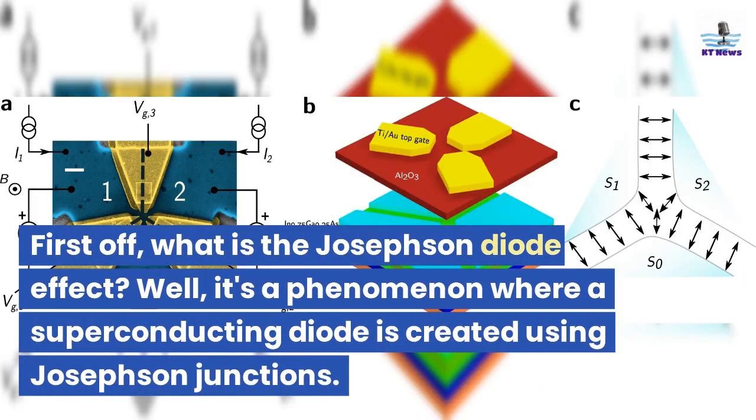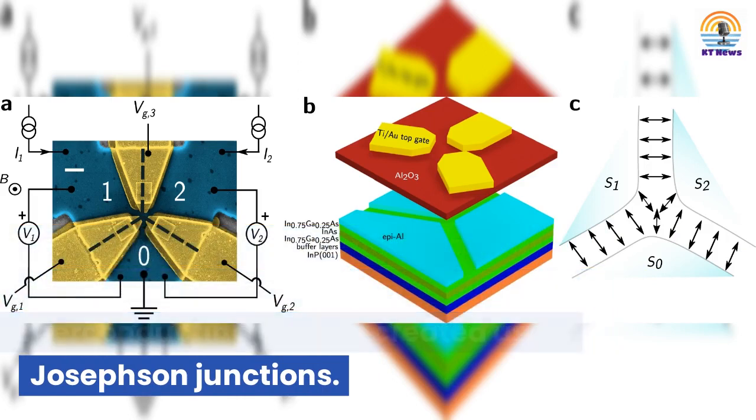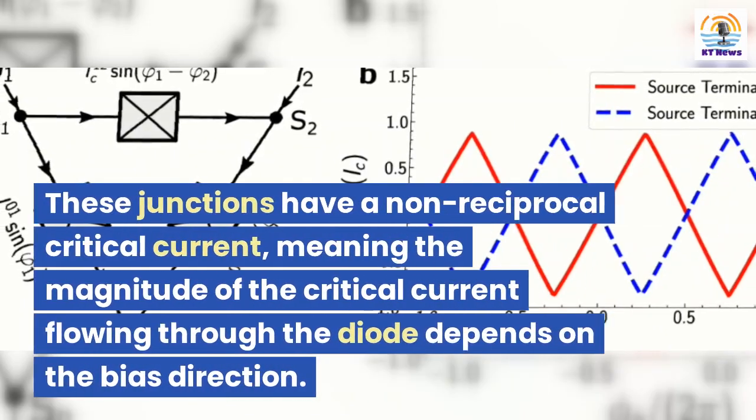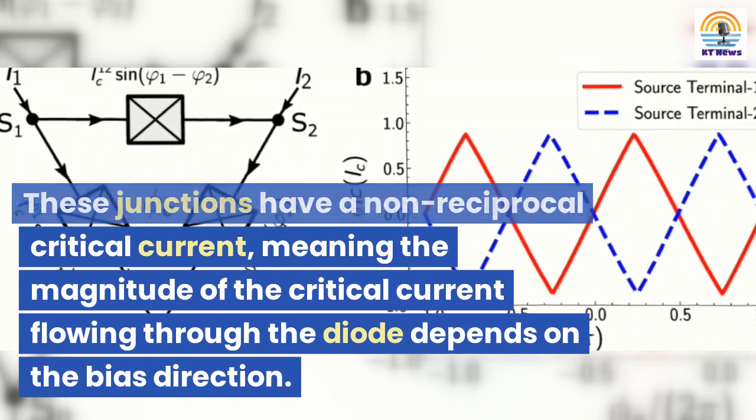First off, what is the Josephson diode effect? Well, it's a phenomenon where a superconducting diode is created using Josephson junctions. These junctions have a non-reciprocal critical current, meaning the magnitude of the critical current flowing through the diode depends on the bias direction.